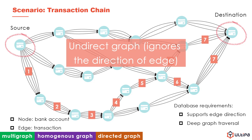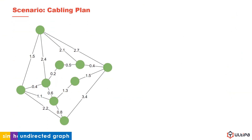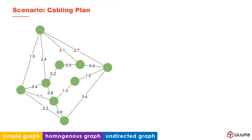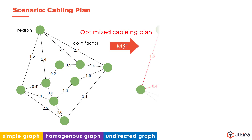Not only the direction of edge but the weight of edge is also critical when performing calculations on a graph. This is an undirected graph where each edge is assigned with a number. Imagine the nodes are regions in a village that need power supply, and the numbers are the cost factors for laying and maintaining power cables between two regions. In order to find the optimized cabling plan with minimum total cost, we can apply graph algorithms such as MST.